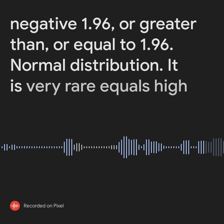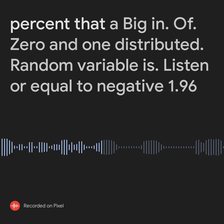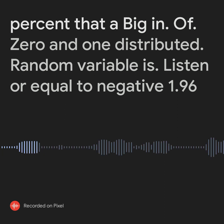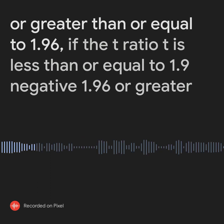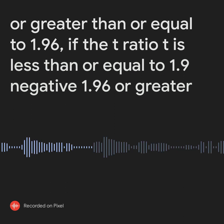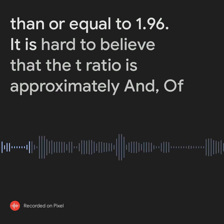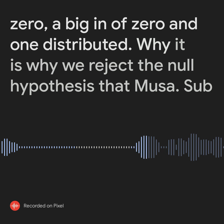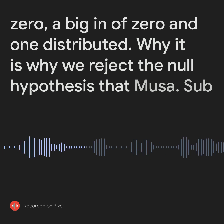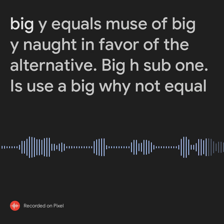Under the normal distribution, it is very rare — only 5% — that an N(0,1) distributed random variable is less than or equal to negative 1.96 or greater than or equal to 1.96. If the t-ratio falls in that region, it is hard to believe the t-ratio is approximately N(0,1) distributed. This is why we reject the null hypothesis that mu sub Y equals mu sub Y-naught in favor of the alternative H_1.